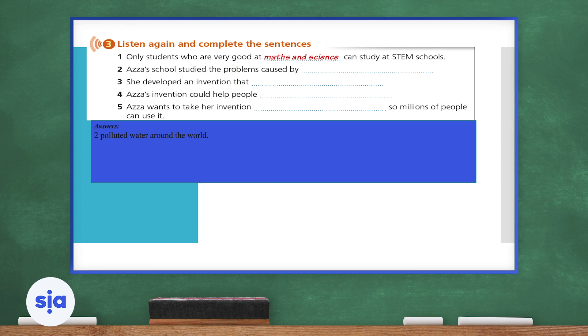Let's read question three. She developed an invention that blank. What did her invention do? Her invention cleans polluted water using only plants. Okay, so first of all, what is an invention? An invention is anything that is created for the first time to help solve a problem or help improve the quality of life.